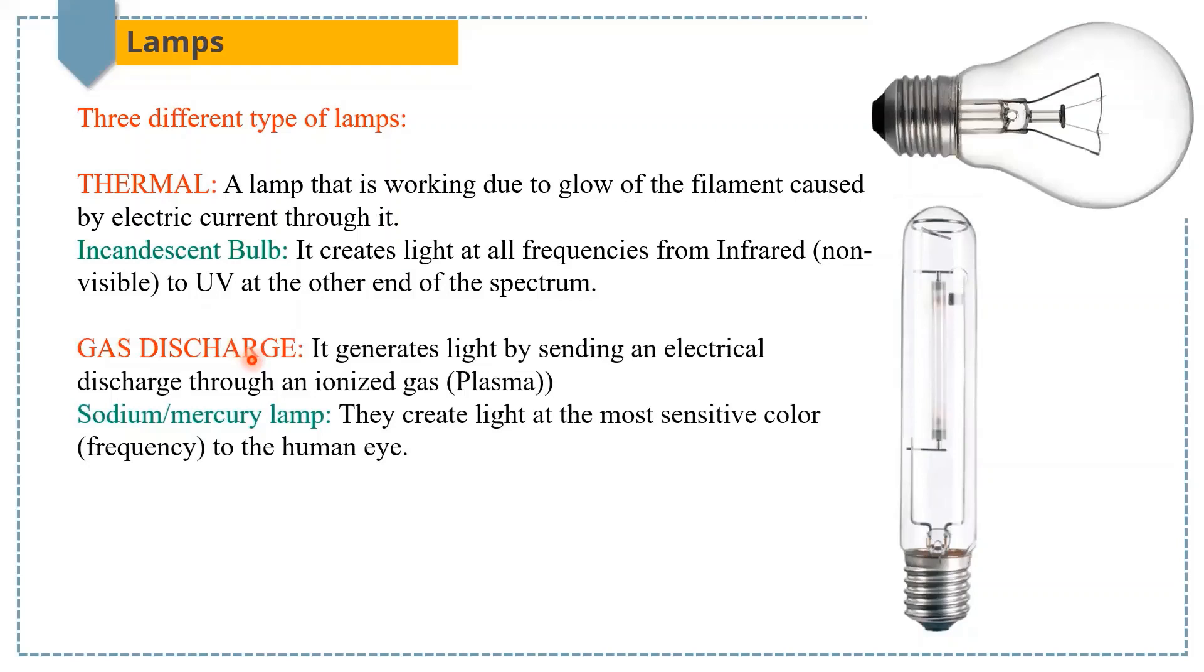The second one is gas discharge. It generates light by sending an electrical discharge through an ionized gas, for example, sodium or mercury lamp. These lamps create light at the most sensitive color to the human eye.